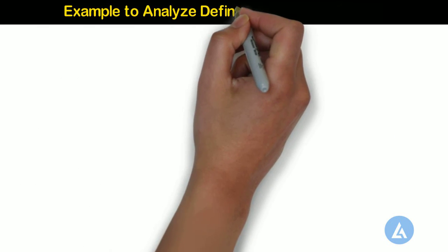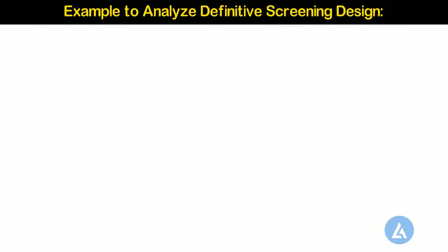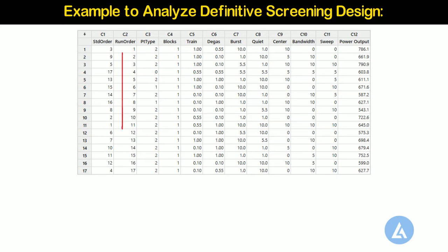Example to analyze definitive screening design. Let's continue the same example and use the same run order to collect the data. During data collection, we need to follow all data considerations we had seen now.